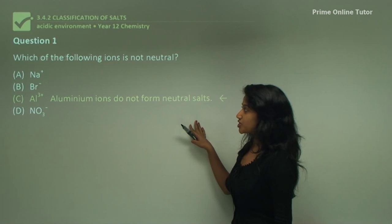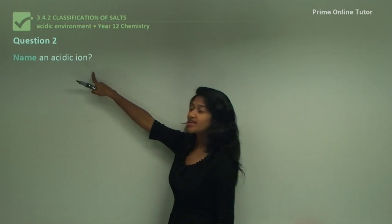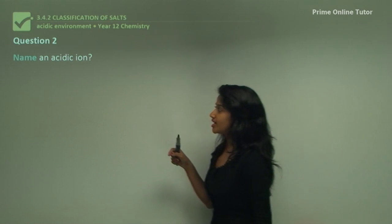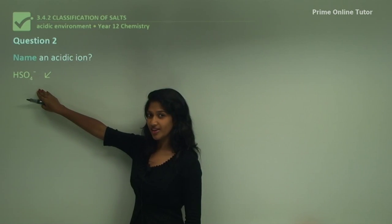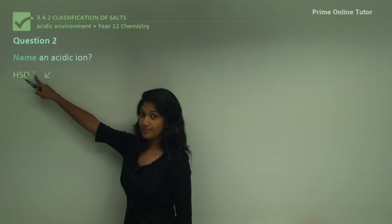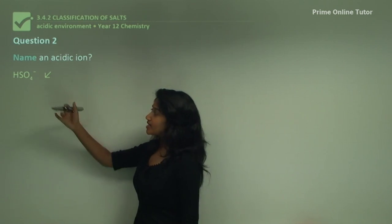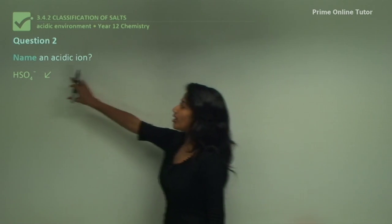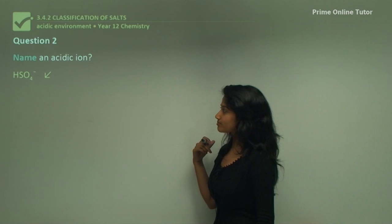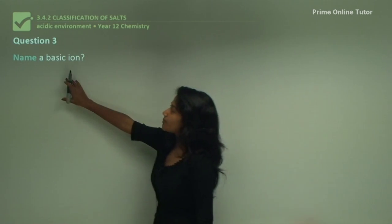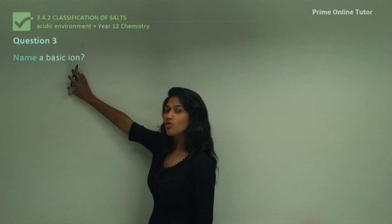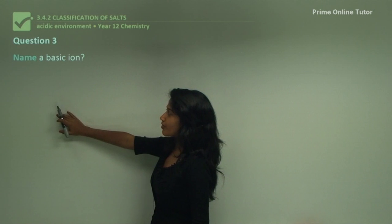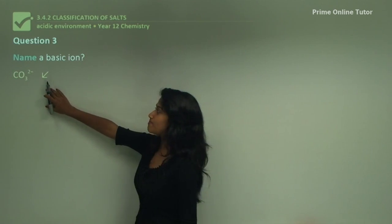Question 2: name an acidic ion. The answer is the hydrogen sulfate ion (HSO₄⁻). Always write the charge and name of the ion along with its chemical formula. Question 3: name a basic ion. For example, the carbonate ion is a basic ion, as it forms basic salts.